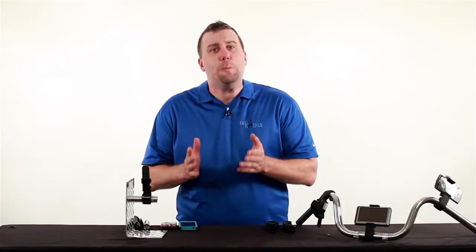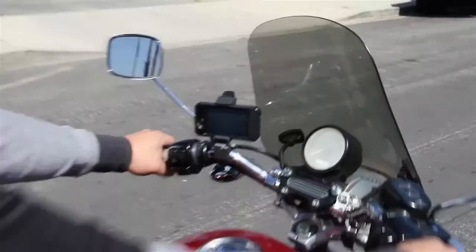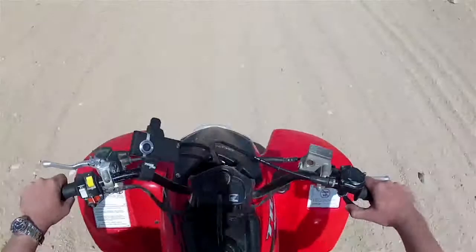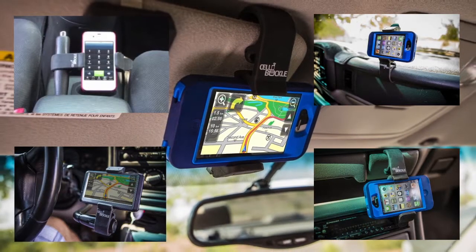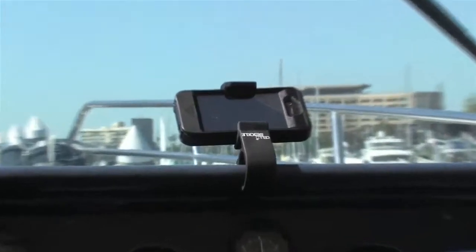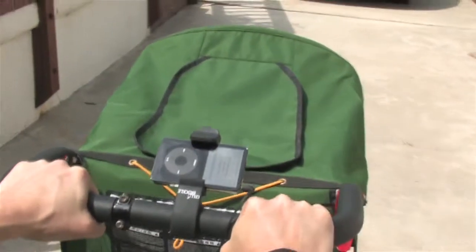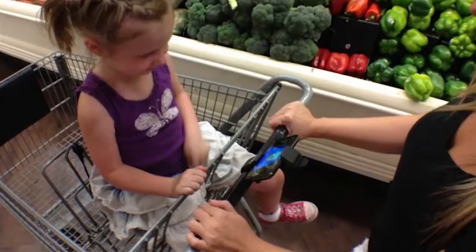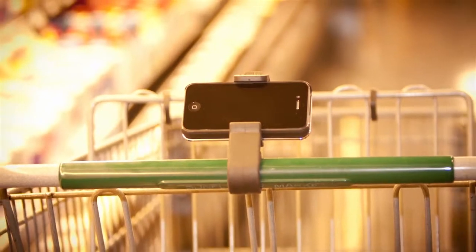Now, let's show you just a few places where you can use your Cell Buckle. Bicycles, motorcycles, ATVs, sand rails, and side-by-sides. You can now have true hands-free freedom in the car, out on the water in your boat. Moms, use it on the stroller or in the grocery store on your shopping cart — entertain children, or turn it around and use it for your grocery apps.